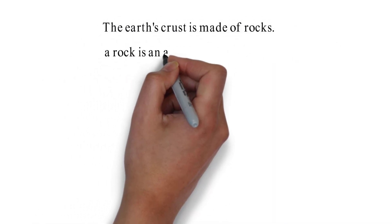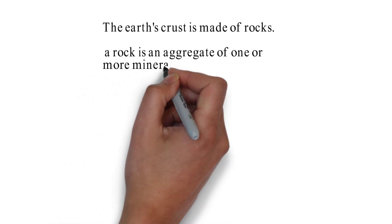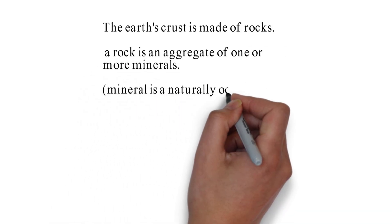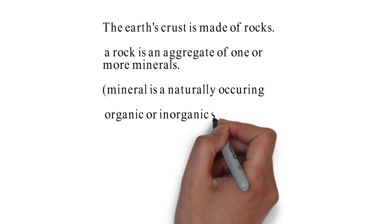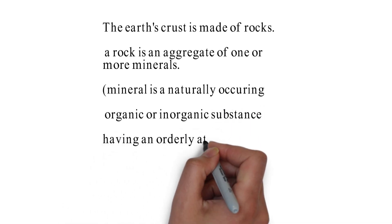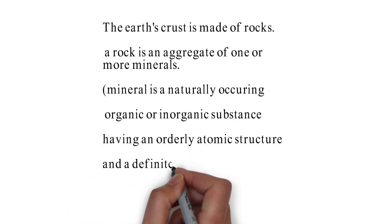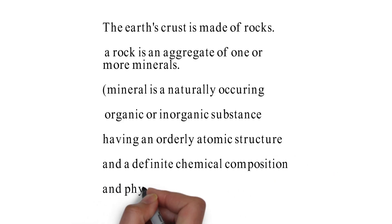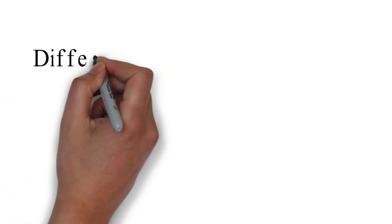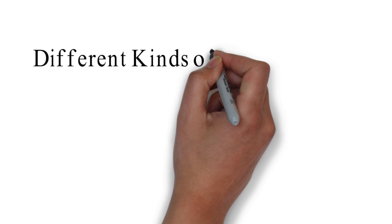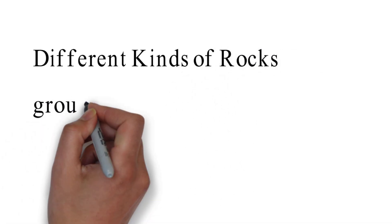And what is a mineral? A mineral is a naturally occurring organic or inorganic substance having an orderly atomic structure and a definite chemical composition and physical properties. Different kinds of rocks are grouped into three major families depending on their mode of formation.